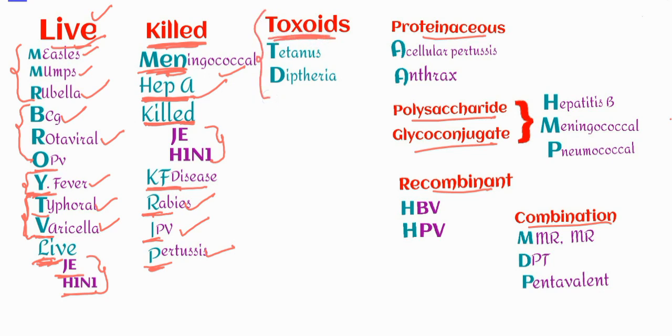This is with the killed vaccines. The next one is toxoids. Toxoids we can remember as TTD — toxoids, tetanus, and diphtheria. This is with the older classification of vaccines.